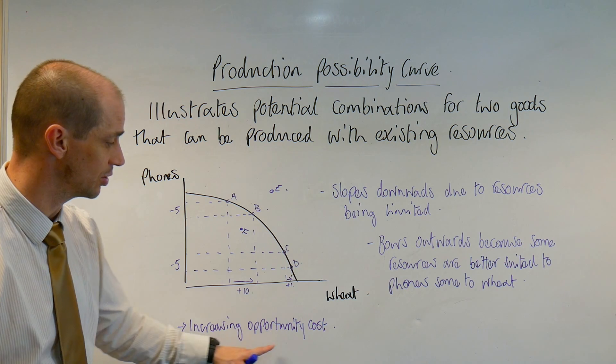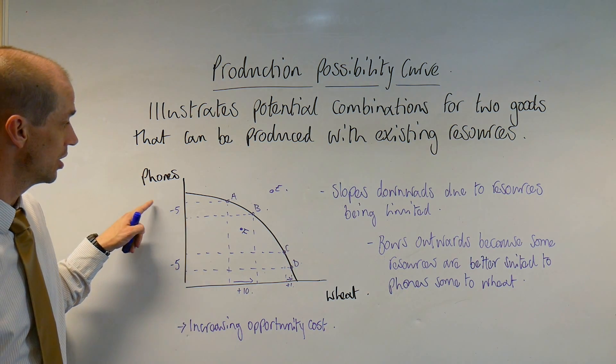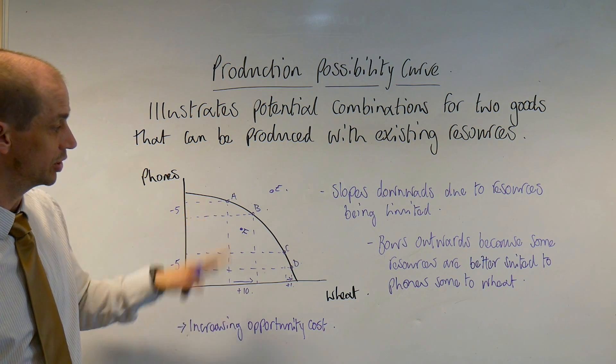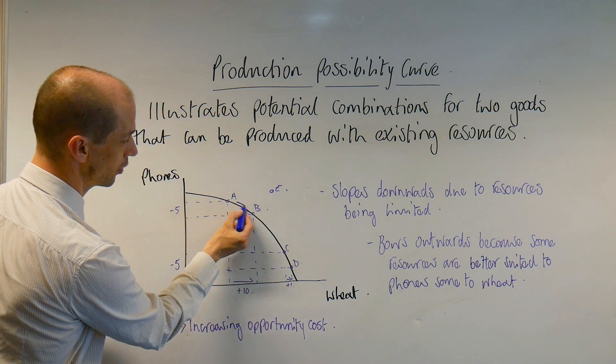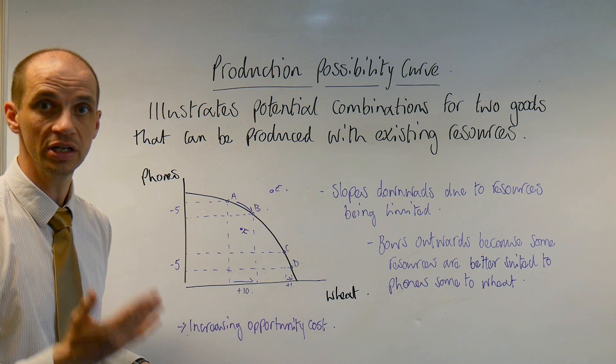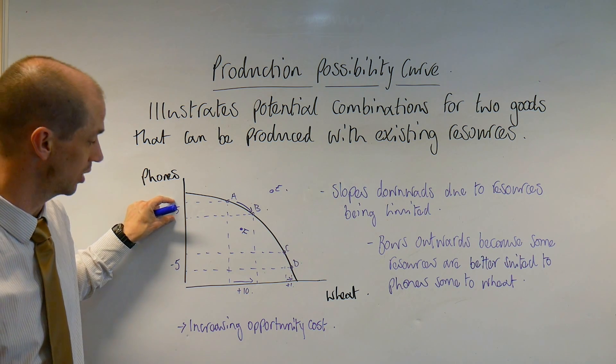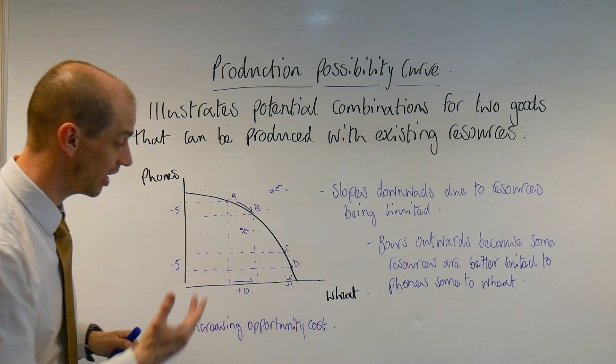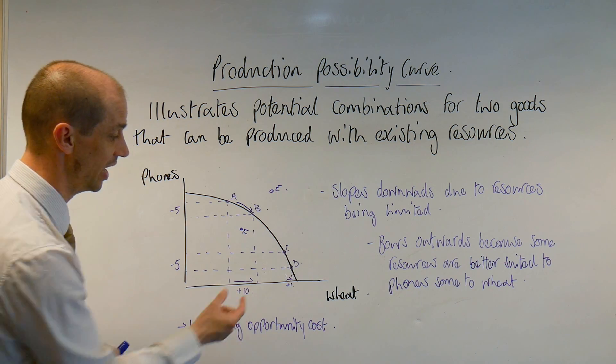Now what's interesting about that is that we can see this by the increasing opportunity cost that we face if we want to increase the production of wheat. So as we move from point A through to point B here, we can see that there is a minus 5 reduction in the actual quantity of phones that are produced and then this enables us to actually increase the production of wheat by plus 10.